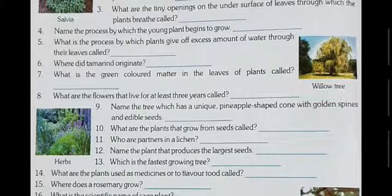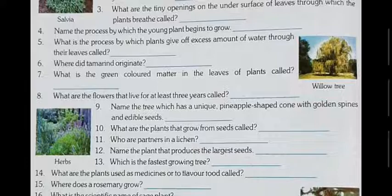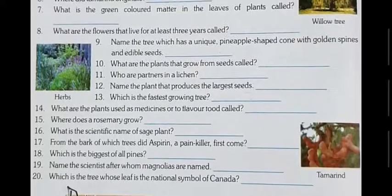Question number seven: what is the green colored matter in the leaves of plants called? That green pigment in the leaves is termed chlorophyll. Photosynthesis is the process by which green plants prepare their food in the presence of sunlight and chlorophyll. If chlorophyll is not present, plants will not be able to prepare food. So chlorophyll is very essential in plants and plays a vital role in food preparation. The answer is chlorophyll.